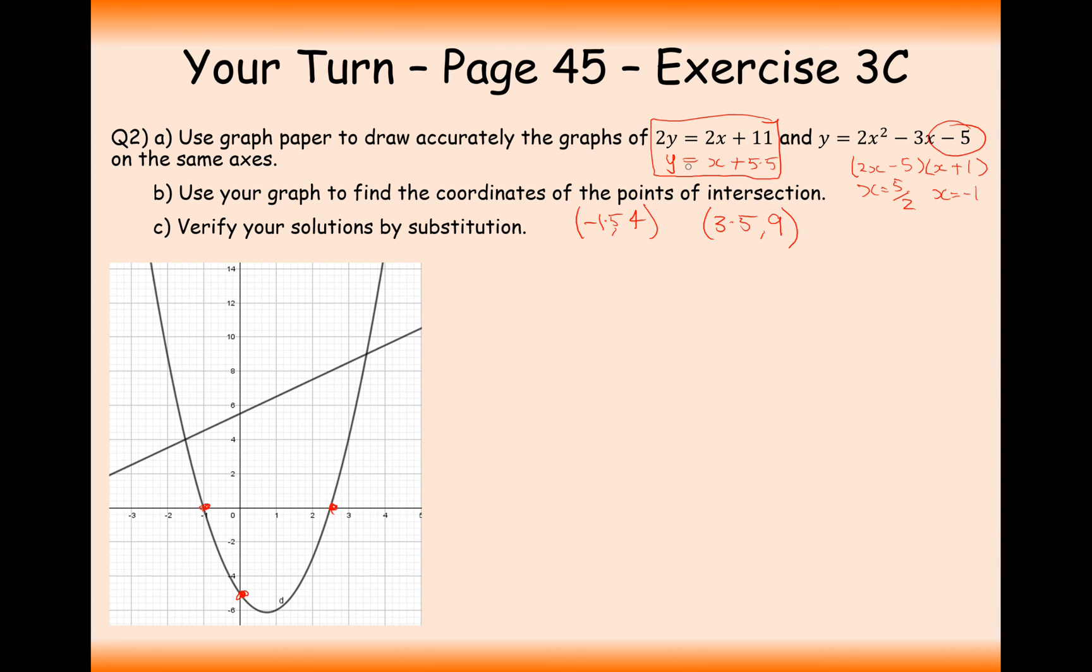Okay, so now what we're going to do is substitute... Well, what we could do here is we'll take y equal to x plus 5.5 and y equals 2x squared minus 3x minus 5. And given that these y values are equal to each other, we can just set the equations equal to each other. So, we get x plus 5.5 equals 2x squared minus 3x minus 5.